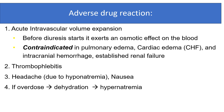Adverse drug reactions of osmotic diuretics: acute intravascular volume expansion occurs before diuresis starts, as the agent exerts an osmotic effect on the blood. Contraindicated in pulmonary edema, cardiac edema, intracranial hemorrhage and established renal failure. Thrombophlebitis can occur. Headache may occur due to hyponatremia, and nausea can also occur. If overdose occurs, dehydration and hyponatremia can develop.